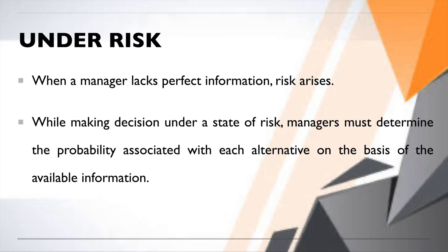Risk arises when there is a lack of perfect information. Information may be available, but it is imperfect for decision making — therefore risk arises. You do not know what the outcome of a choice will be. Based on available but imperfect information, the final result could turn out to be profit or loss. Such a situation is called decision making under risk.